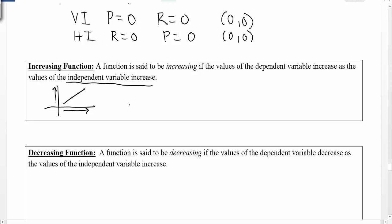There are a lot of different ways that functions can increase. They can look pretty linear, or they can be curved in many ways. But as long as they're going up from left to right, then that picture indicates they're increasing, because as the x values go up, the y values go up.